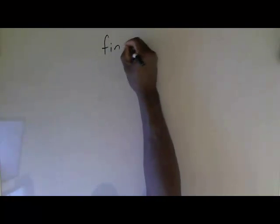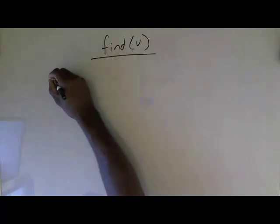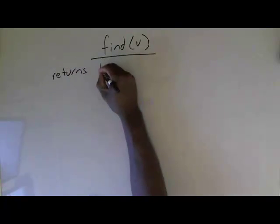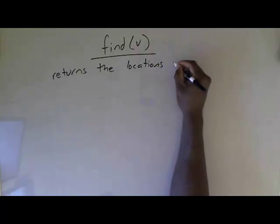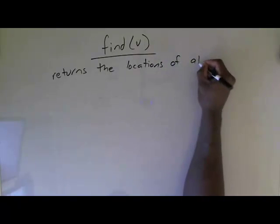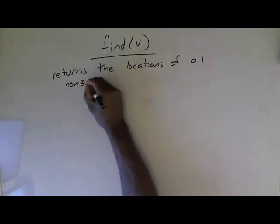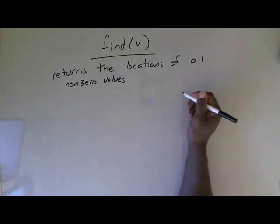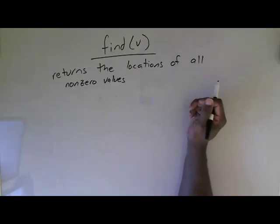The function find takes in a vector and returns the locations of all non-zero values in that vector. So it returns the locations, or the indices, of all non-zero values in that vector.